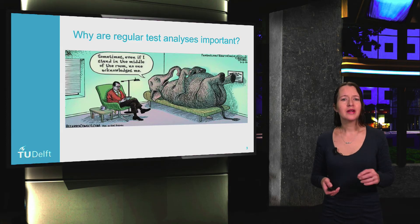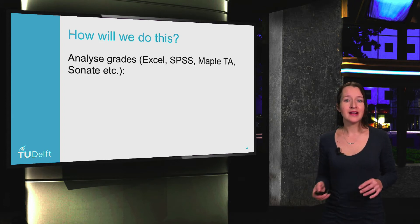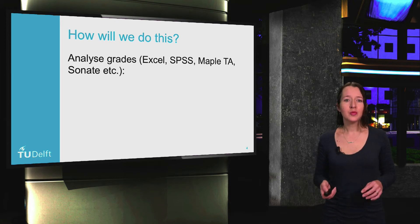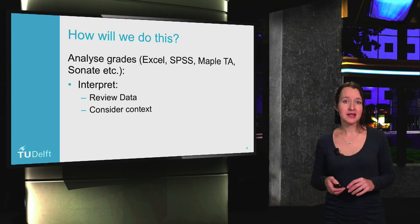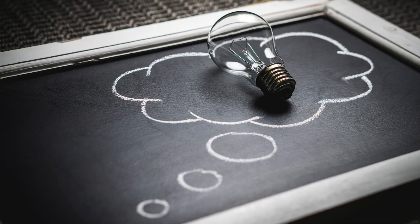So today, we're going to look at how to address this, and we do it in three stages. First, we input the data for analysis using software — in this course, we prefer to use Excel. We'll then interpret: look at what the data says and look at the context. Next, we're going to identify the cause of any problems that we found.